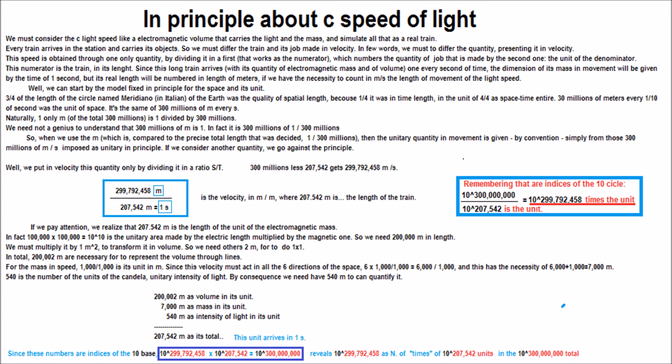200,002 meters is volume in its unit. 7,000 meters is mass in its unit. 540 meters as intensity of light in its unit. 207,542 meters as its total.